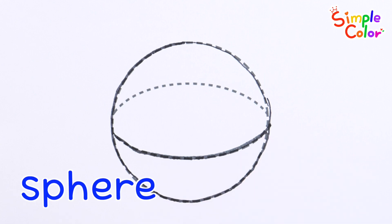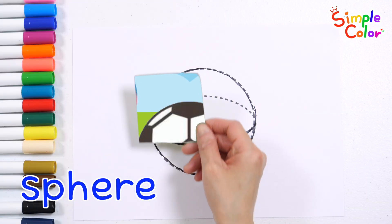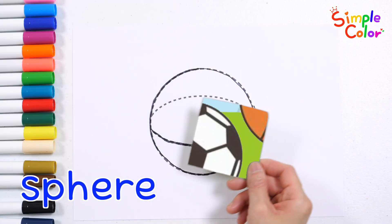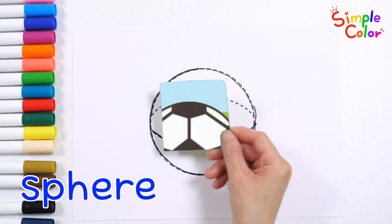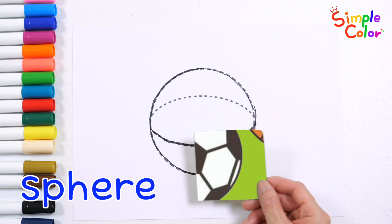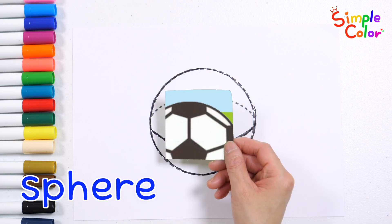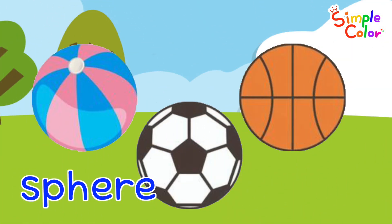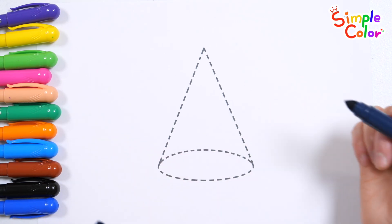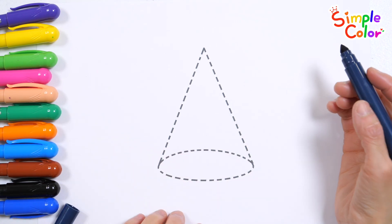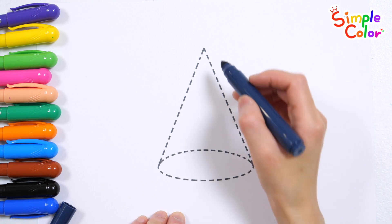Sphere. What are some sphere-shaped objects? The ball is sphere-shaped. Let's draw the shape by tracing the dotted lines.